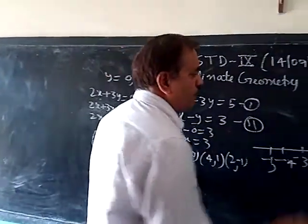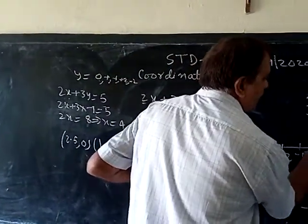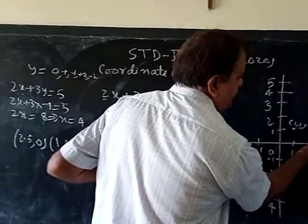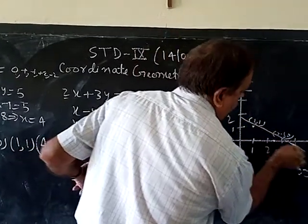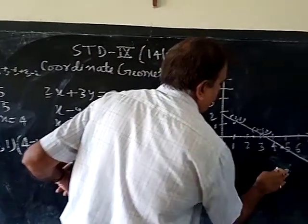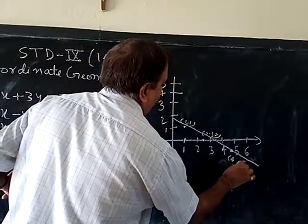Similarly, second equation, (3, 0). Where is (3, 0)? First, take the scale and join this point with the help of scale. When you will use the scale and pencil, exact value you will get.